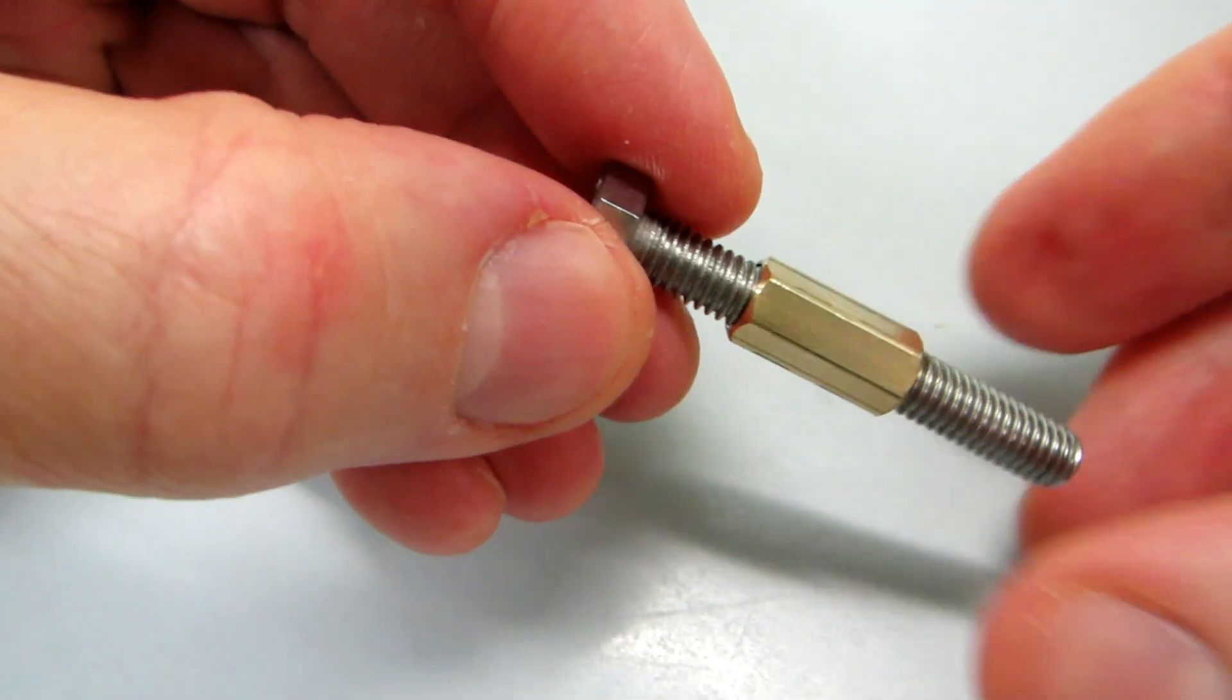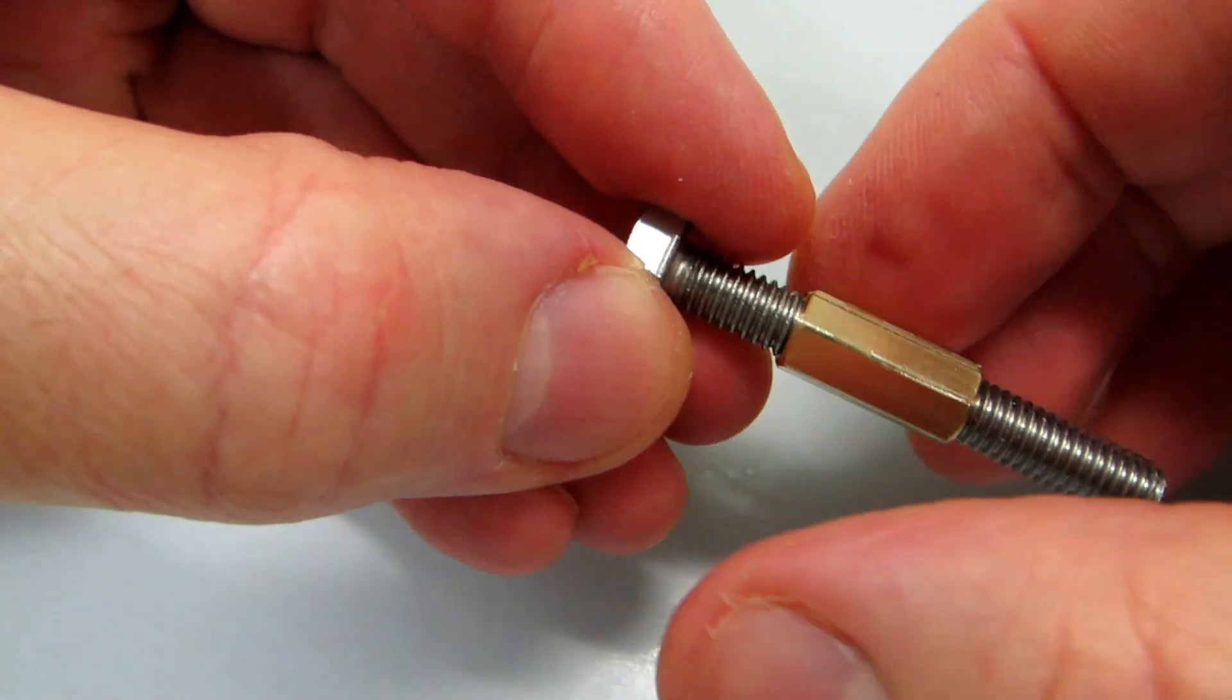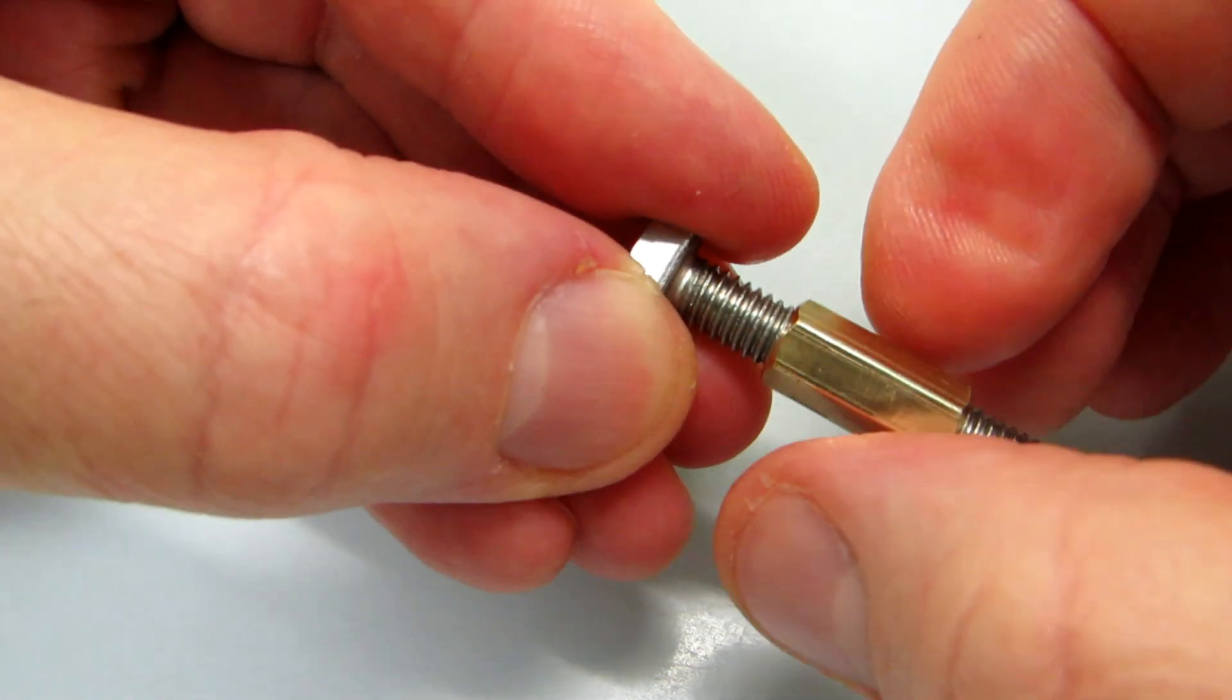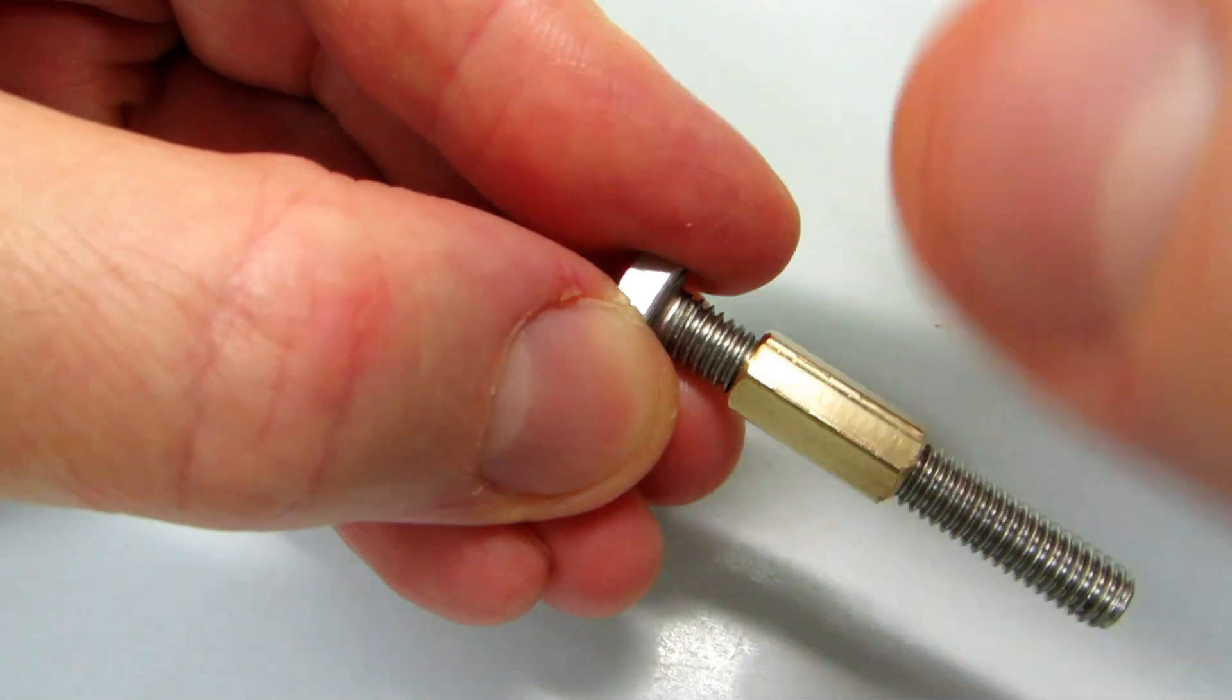When I hold the screw at the head, I can turn the nut clockwise, but not counter-clockwise. I can only turn it towards the head.